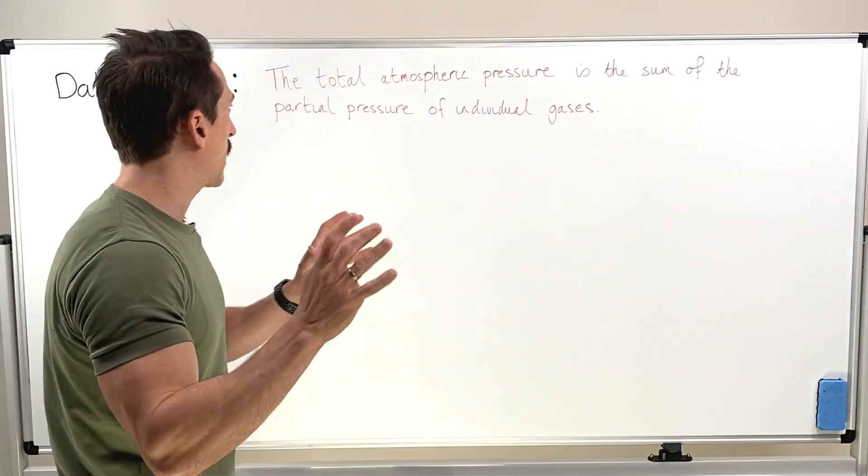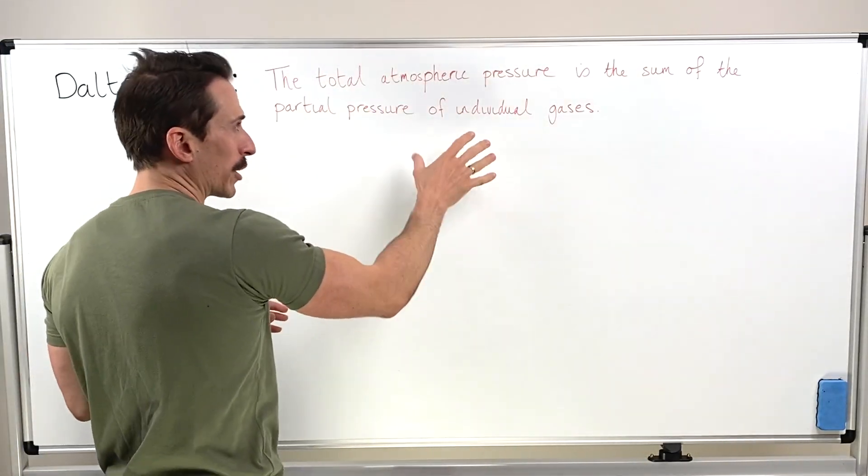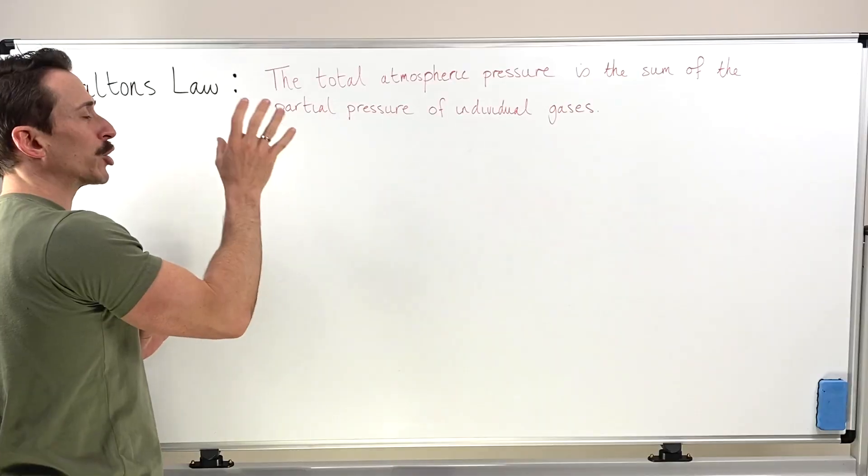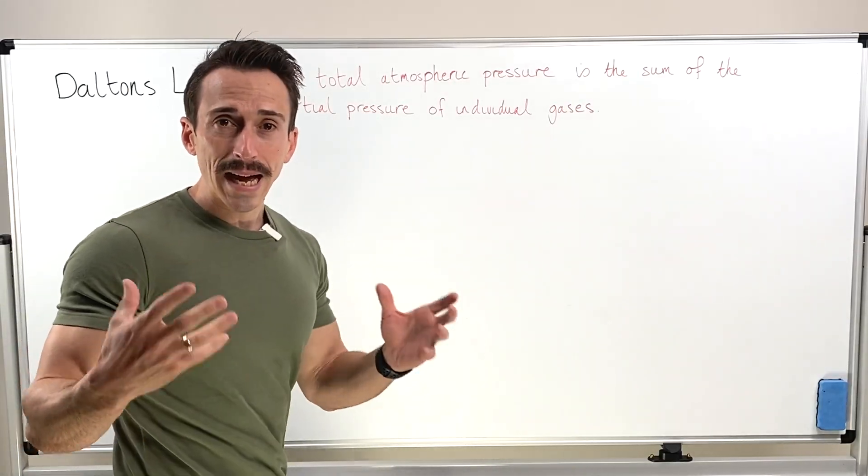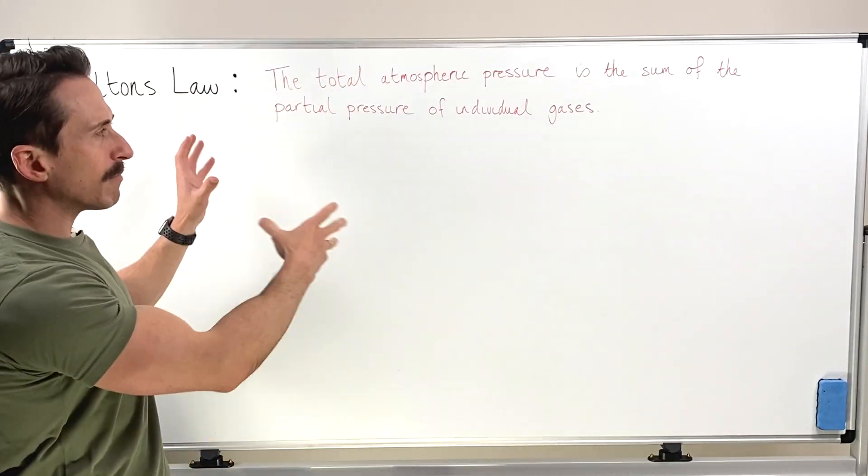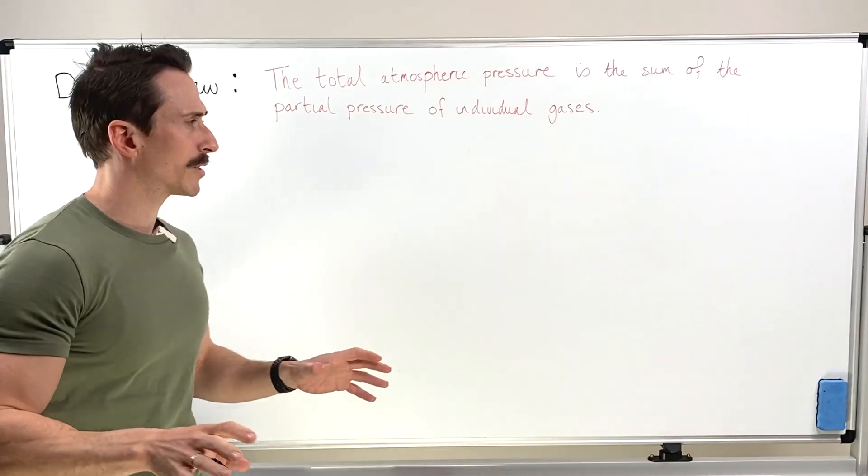Dalton's Law states that the total atmospheric pressure is the sum of the partial pressure of individual gases. You may not understand what this is referring to now, but it's a very simple concept.